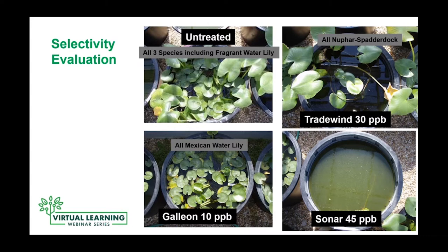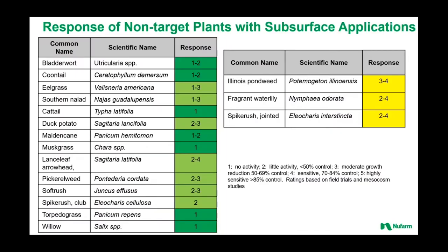Starting with all three species together in the containers, you could see that Tradewind at 30 parts per billion removed both water lily species but the spatterdock remained. Sonar, a long-persistence product, removed everything. Galleon showed flipped selectivity — the spatterdock was removed but the Mexican water lily remained. Really big differences depending on which species and which chemistry you're working with.